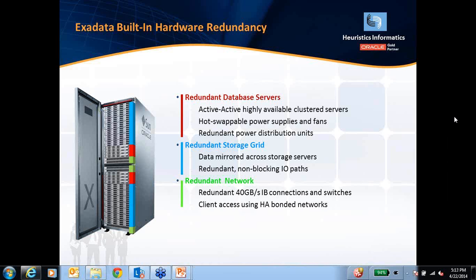You've got the redundant database servers in an active-active configuration. Even in those database servers, every component by itself is redundant, including the power supplies, the fans, the networking components, the network interface cards, the memory, the storage controllers — everything is redundant. In the storage grid, the data is mirrored across several storage servers. Depending on what configuration you choose, you can have a double-mirrored or triple-mirrored storage setup.